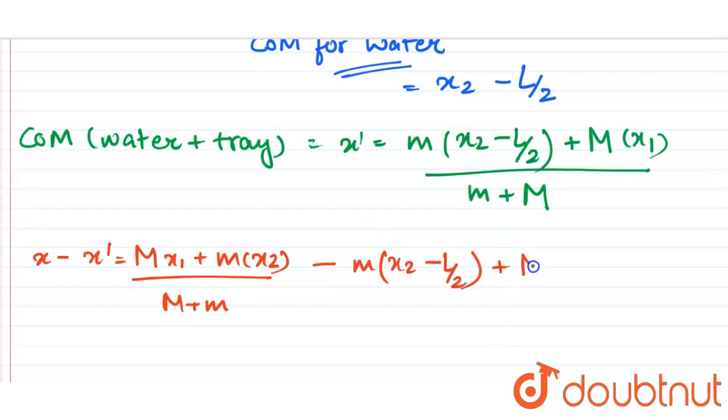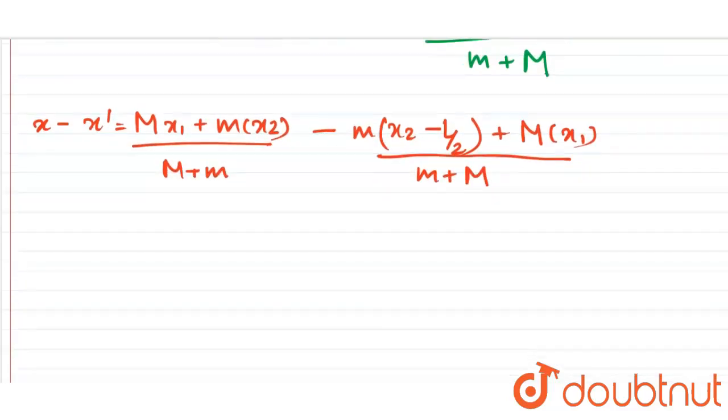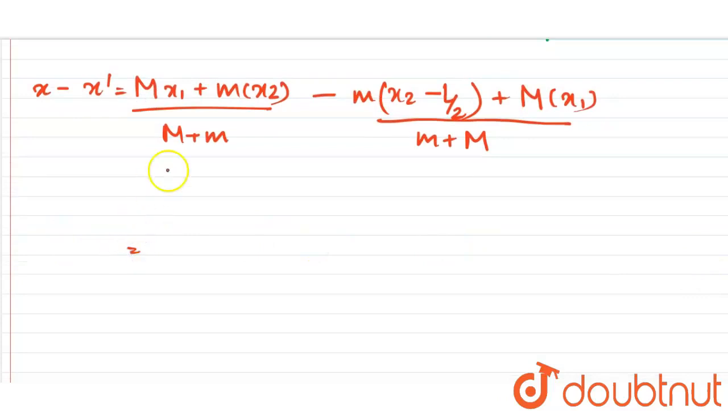And this comes out to be... so this will get cancelled from this and this expression will get cancelled from this expression. So what we will be left with is m L by 2 upon m plus small m. So this is the shift in center of mass due to melting of ice.